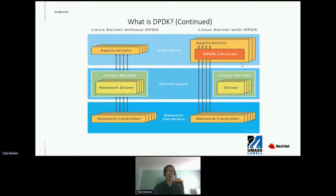As you can see from this picture, on the left we have the typical application architecture, where a packet goes from the application in user space to the network driver in kernel space, then finally to the network controller in hardware. On the right, we have an application using DPDK, where the packet goes from the application to the DPDK libraries — still in user space — then to the network controller, showing how DPDK allows a packet to bypass kernel space, with DPDK libraries taking the place of the network driver without leaving user space.